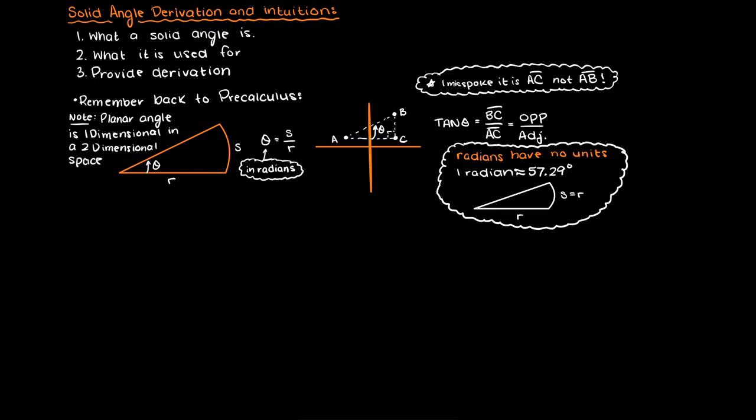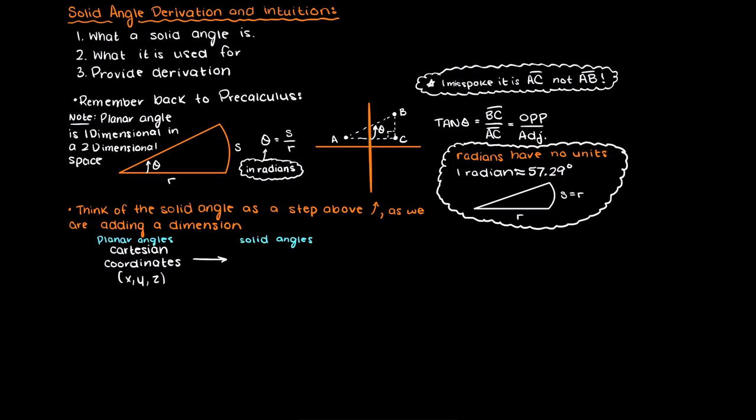Well you can think of the solid angle as a step above what you previously learned about angles in 2D. That is we are adding in another dimension and we are leaving the Cartesian coordinate system and are going to be going to the polar coordinate system which is much more suited for our added dimension. So as a definition our solid angle is a 2D angle but in a 3 dimensional space. And this will become more clear later so do not worry too much about this right now.